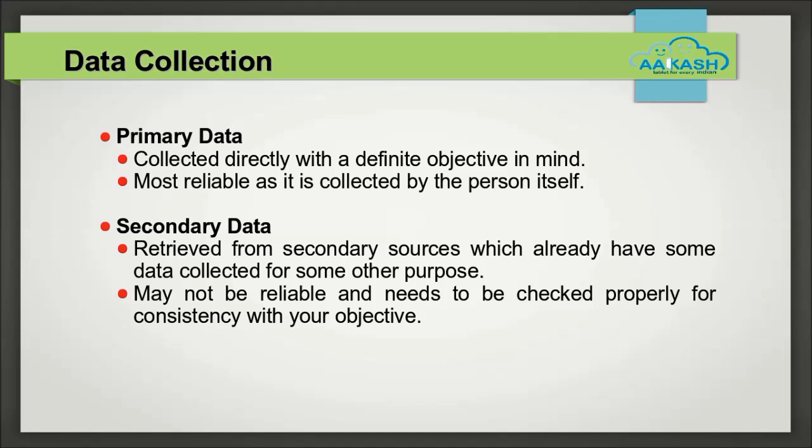Data collection. Data used for statistics is of two types. Primary data is the data collected with a definite objective in mind. This is most reliable as it is collected by the person himself with a clear intention of getting the correct data.